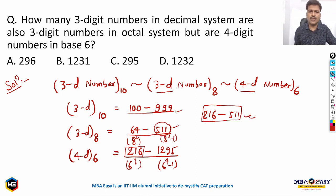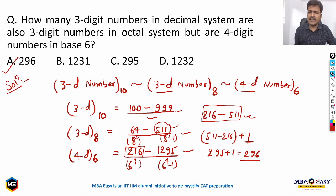So how many numbers are there? 511 minus 216, right, plus 1. So this will give you 295 plus 1, which is 296. So my answer for this question is option A, 296.